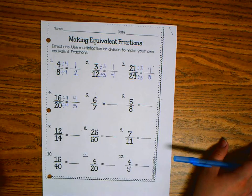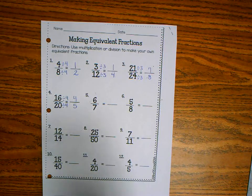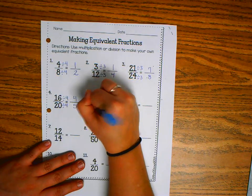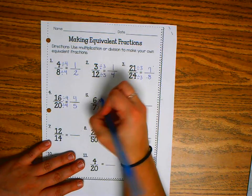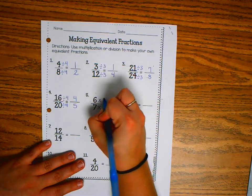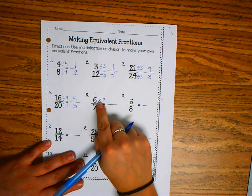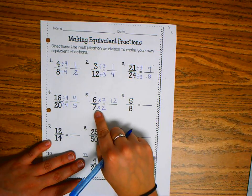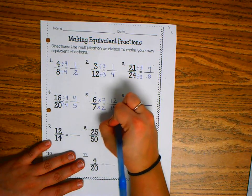6 sevenths. There's nothing that I can divide into both of those, but I can multiply. So I'm going to multiply by just any number. I could pick any number, so I'll pick 2. 6 times 2 is 12. 7 times 2 is 14.